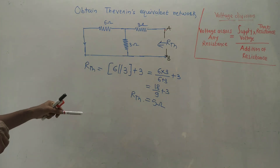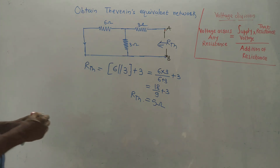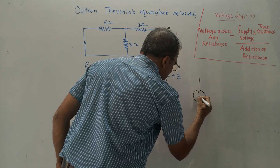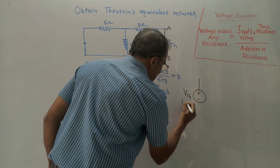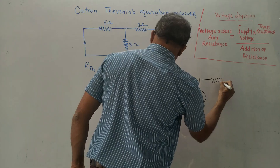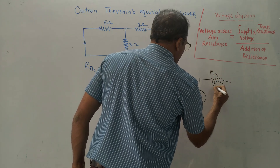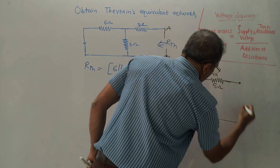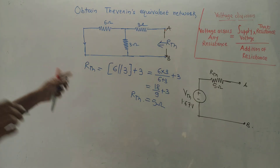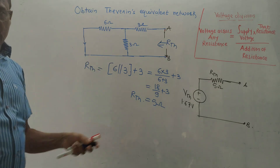This is the second step. In the third step, draw the Thevenin's equivalent diagram. In the first step we calculated VTH = 1.67 volt. In series with that, draw the resistance RTH = 5 ohm. Mark these two points as A and B. This is the Thevenin's equivalent network for the given circuit. Let us solve one more numerical so that this concept will be more clear to you.